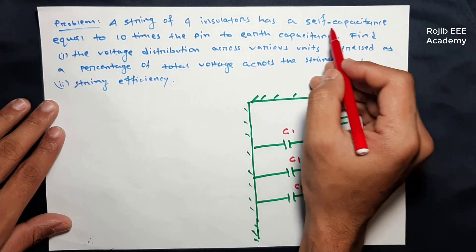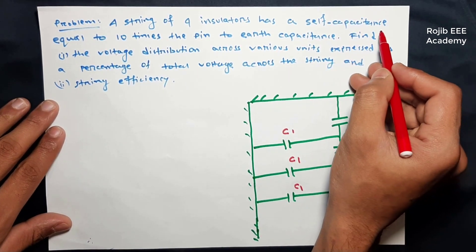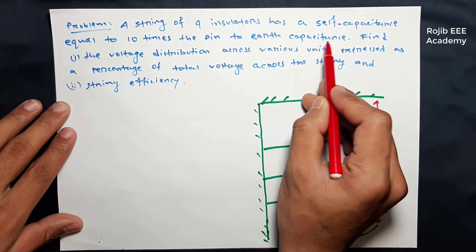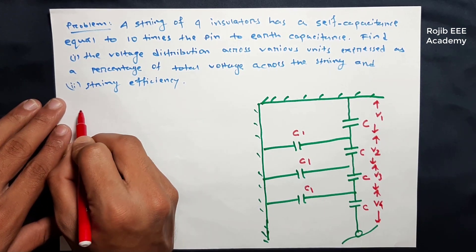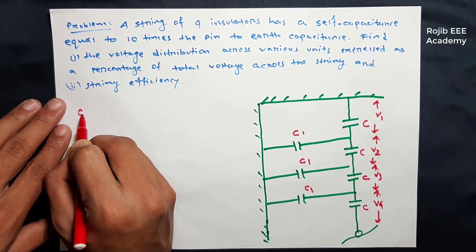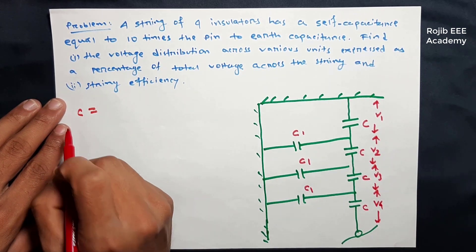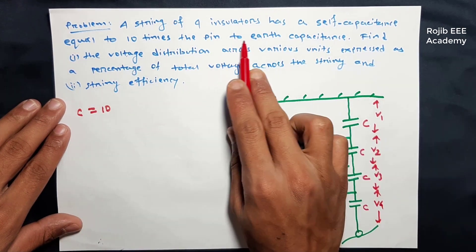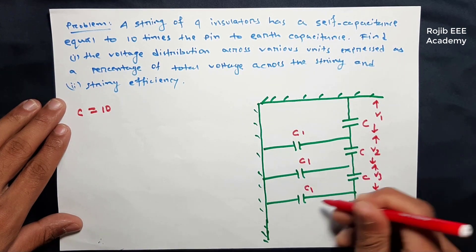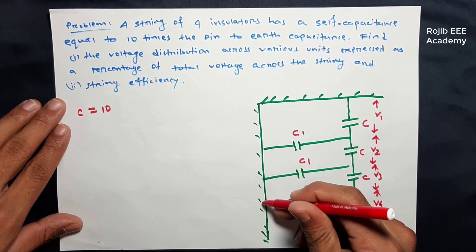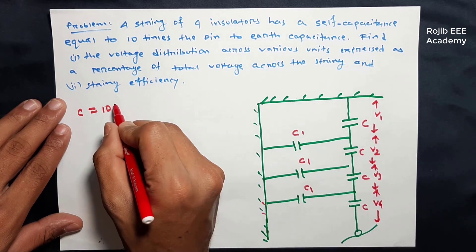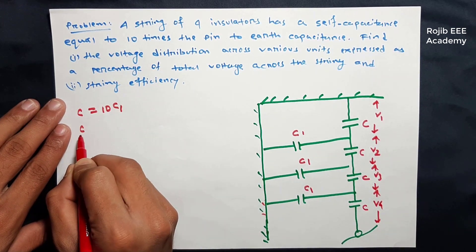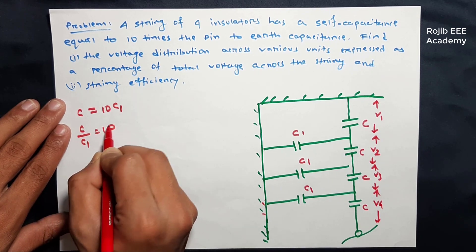The key condition is that self-capacitance is equal to 10 times the pin-to-earth capacitance. That means C equals 10 times C1, so pin-to-earth capacitance is C1, which means C equals 10 times C1. Therefore, C divided by C1 is equal to 10.